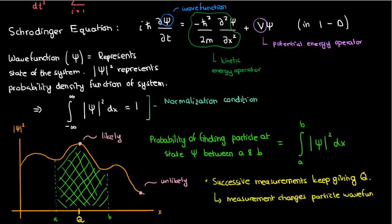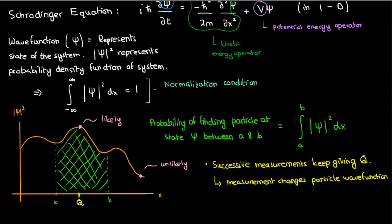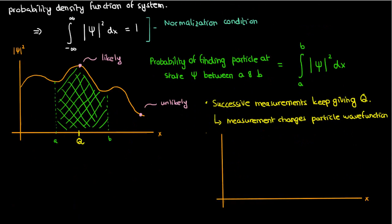It's because by taking a measurement, I'm actually changing the particle's wave function. So instead of being a probability distribution that covers multiple values, by taking a measurement I change the wave function to a delta function with one spike at what my measurement gave me — one spike at Q. If I keep taking successive measurements on the same system, this delta function doesn't budge; it stays there, and that's why you keep getting the same answer.